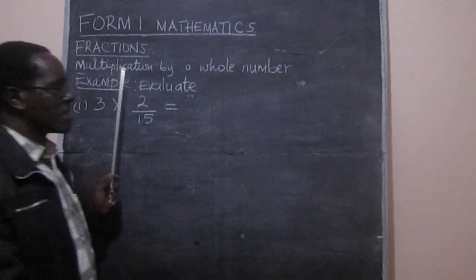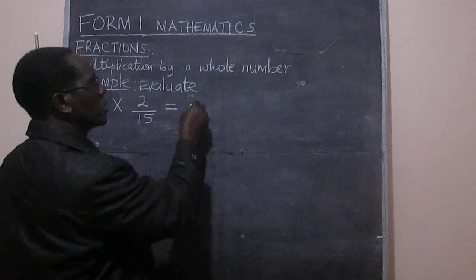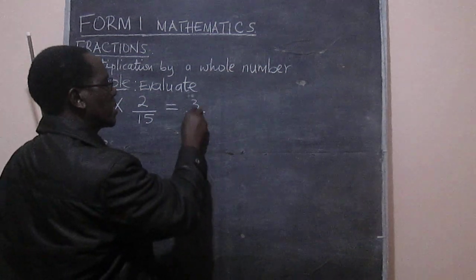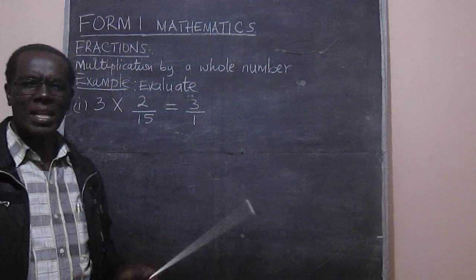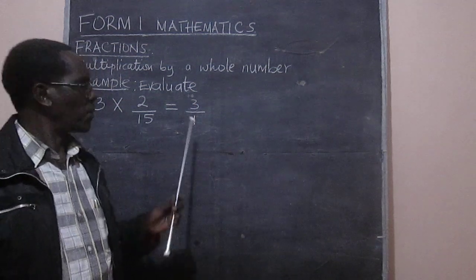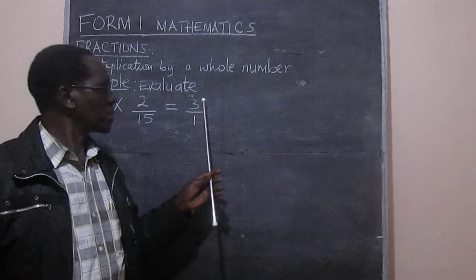We have 3 multiplied by 2 over 15. Now the first thing to do would be to write these three in a slightly different way. I've written it as 3 over 1. Well, not very necessary, but I'm writing it that way.